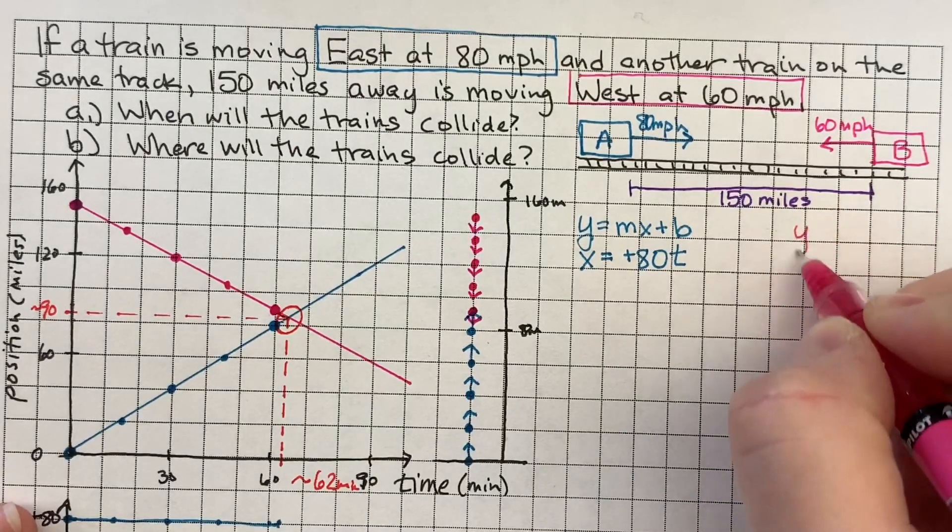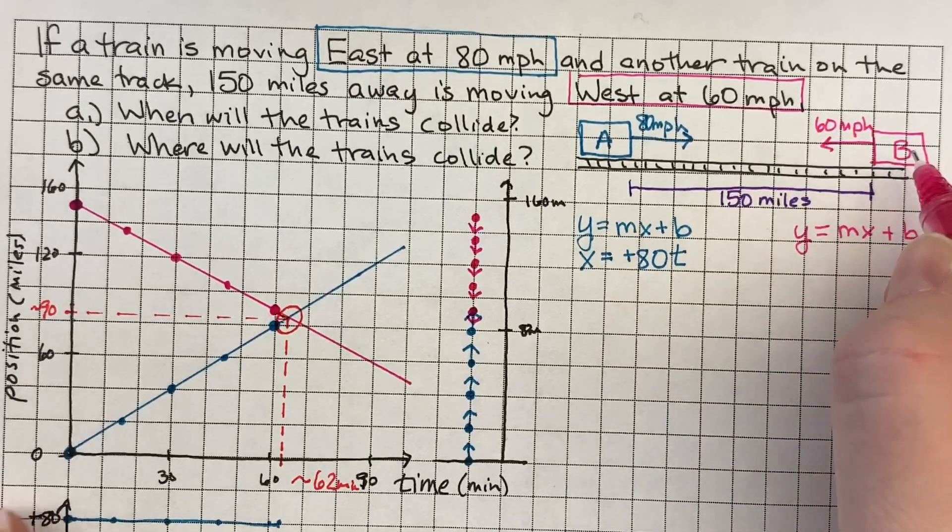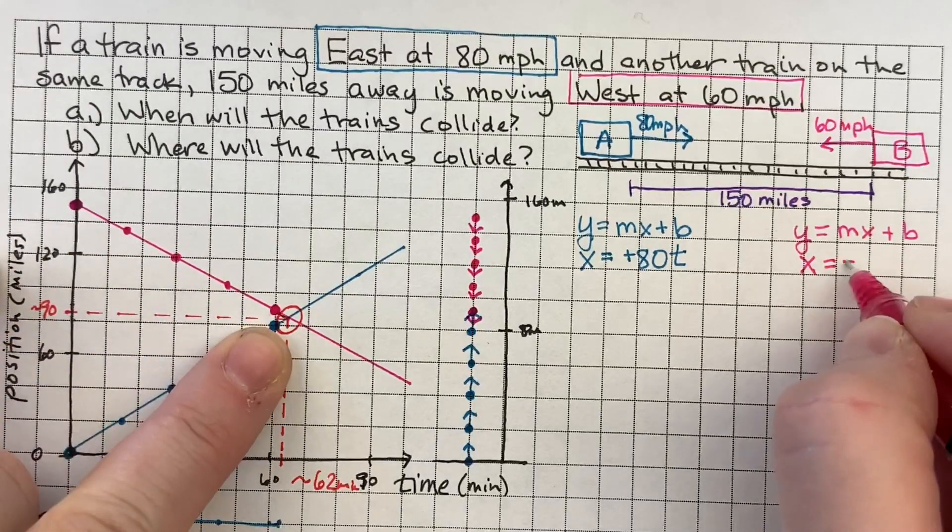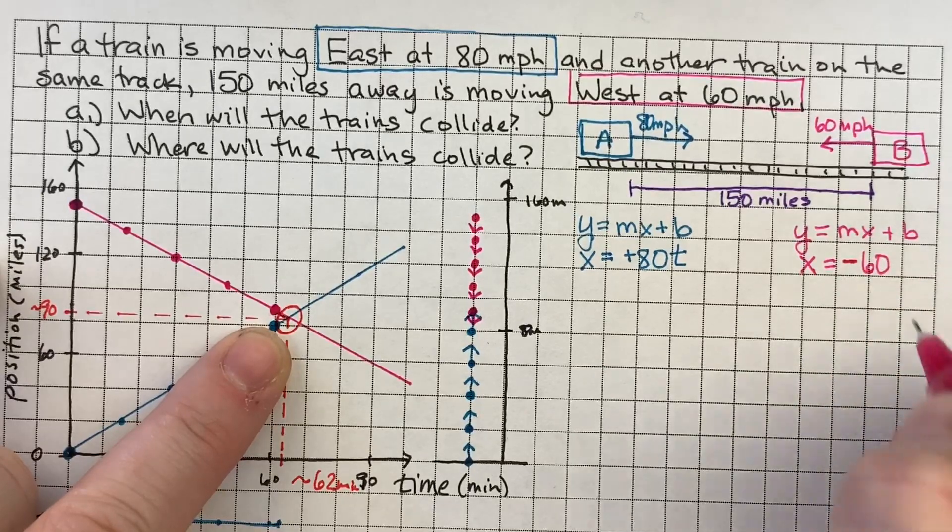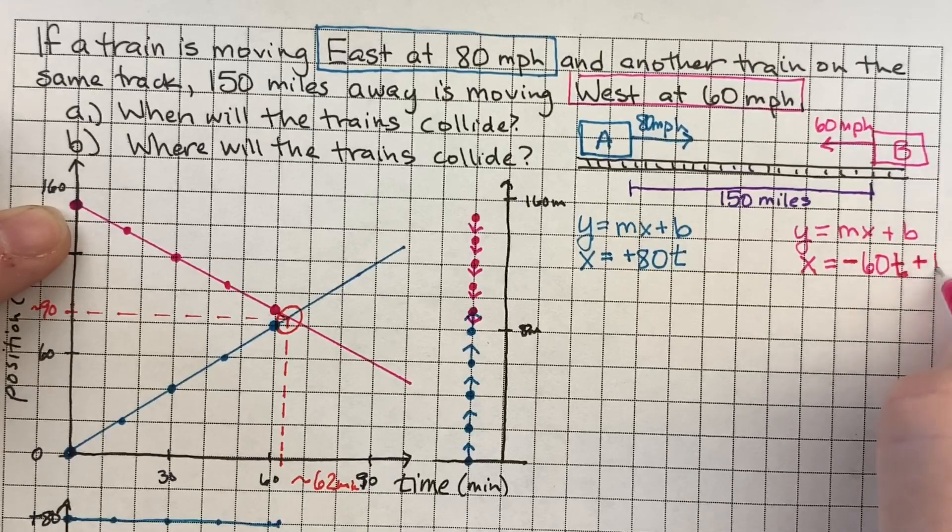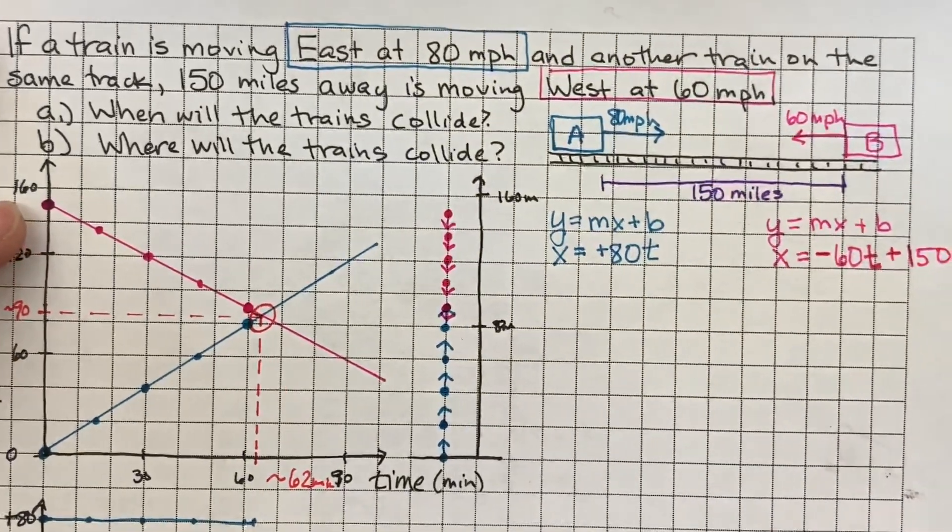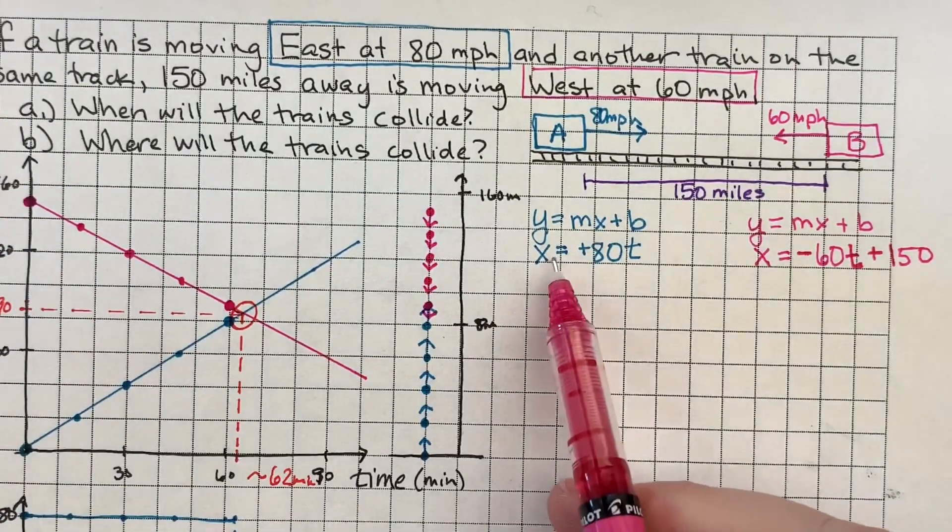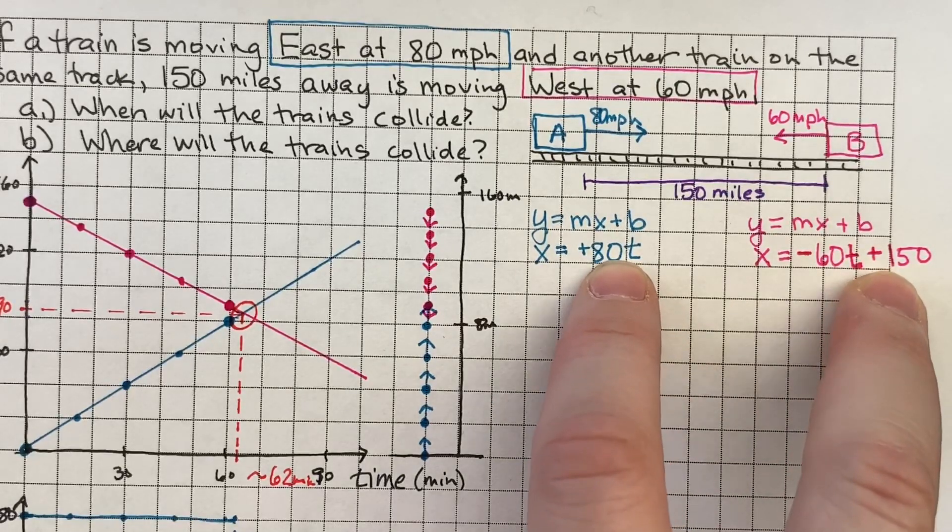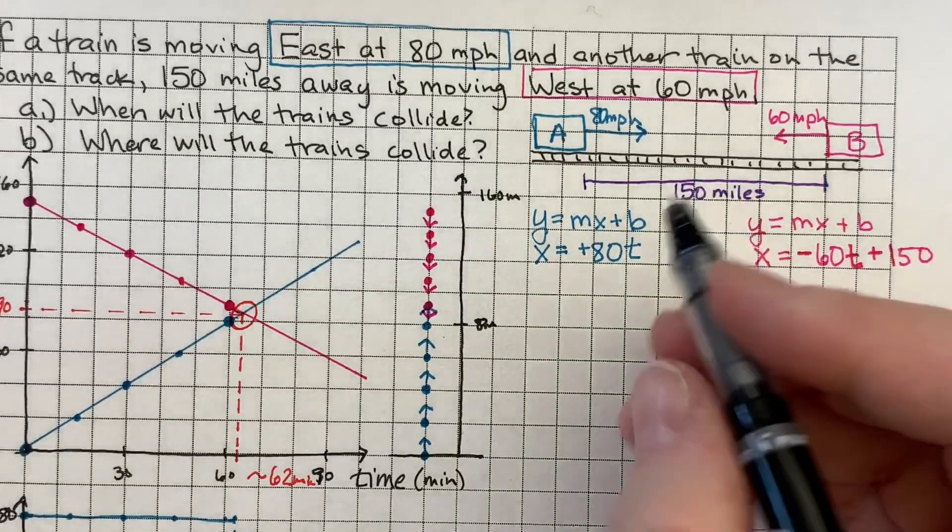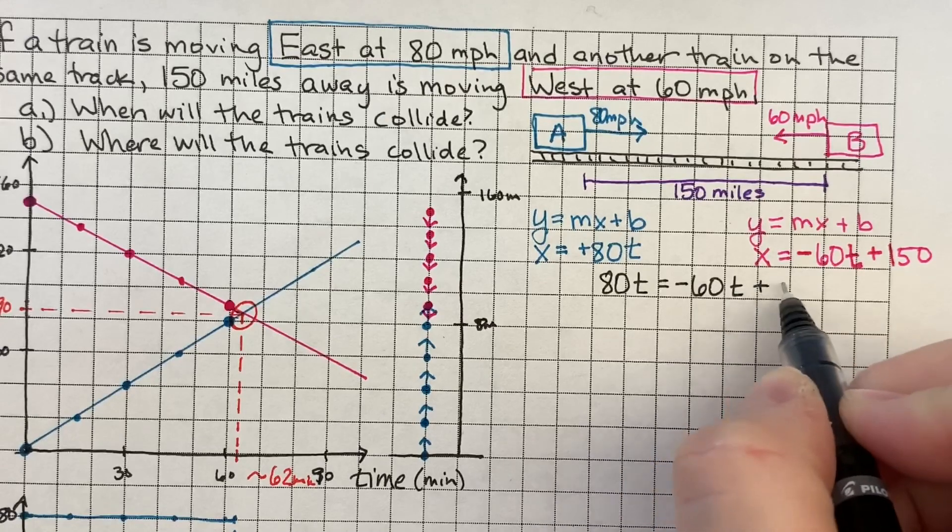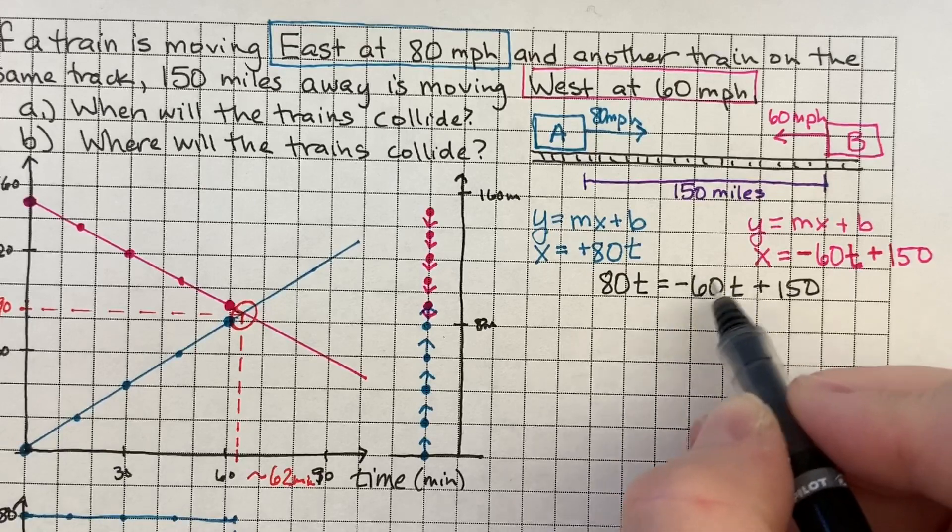And if I use Y equals MX plus B formula for the train B, my Y axis is now my position axis. And for position, we use the letter X. My slope is negative 60 miles per hour. My X axis is my time axis. So I'm going to put a T. Plus my intercept is actually 150, which is miles. So if X is equal to 80T and X is also equal to negative 60T plus 150, then we could say that these two things are equal to each other. Because if they're both equal to X, they have to be equal to each other. So we'll write that as a new formula. We'll say 80T, set that equal to negative 60T plus 150.